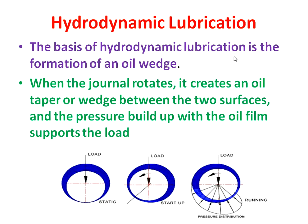The basis of hydrodynamic lubrication is the formation of an oil wedge. The oil wedge is nothing but a decreasing thickness of oil film. You can see here: at one position the oil film has maximum thickness; from there the thickness goes on decreasing and finally becomes minimum at the other position. When this oil film thickness goes on decreasing, at the same time pressure goes on increasing. The arrows shown here indicate the pressure distribution.